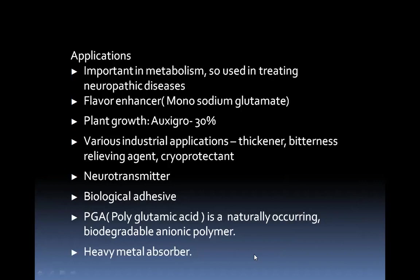Excess production of ammonia is toxic, but glutamic acid is also used as a flavor enhancer and for plant growth under the name Oxy Grow at 30%. It has various industrial applications as a thickener, bitterness-relieving agent, and cryoprotectant. It also acts as a neurotransmitter and as a biological adhesive. Polyglutamic acid (PGA) is a naturally occurring biodegradable anionic polymer — environmentally friendly and also a heavy metal absorber.